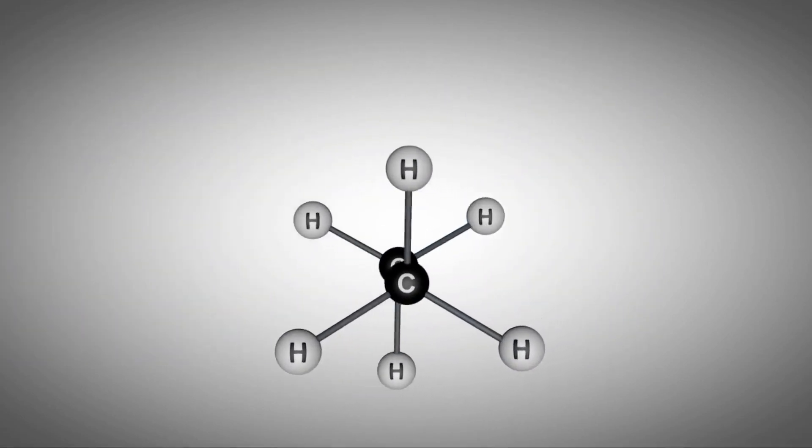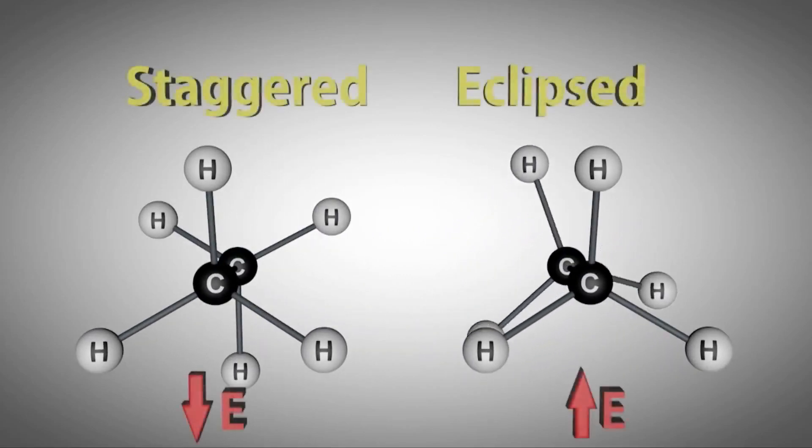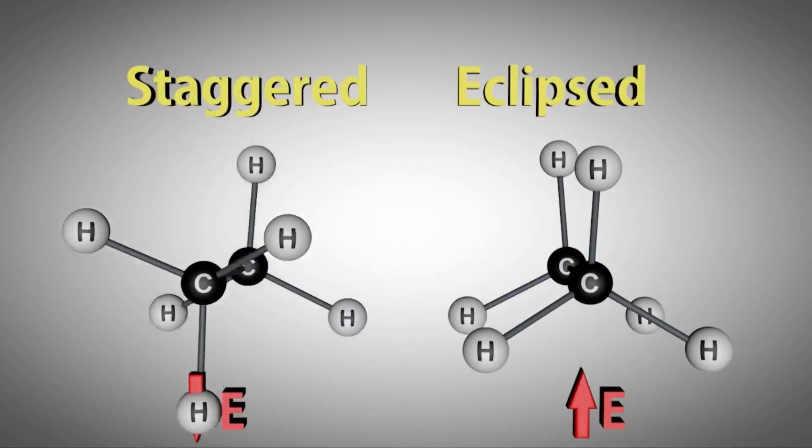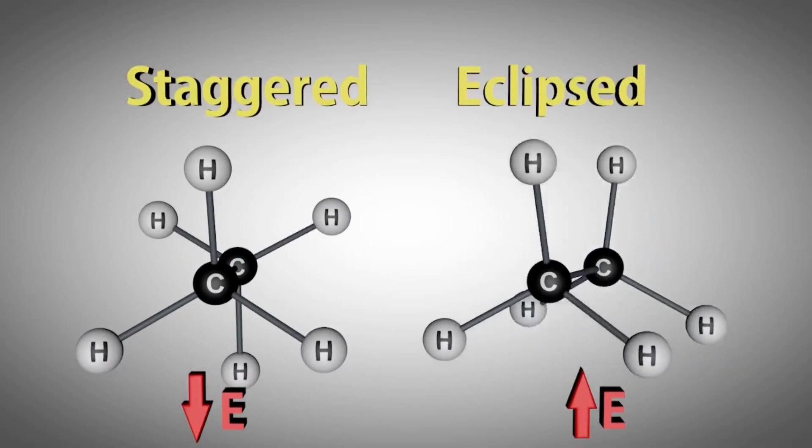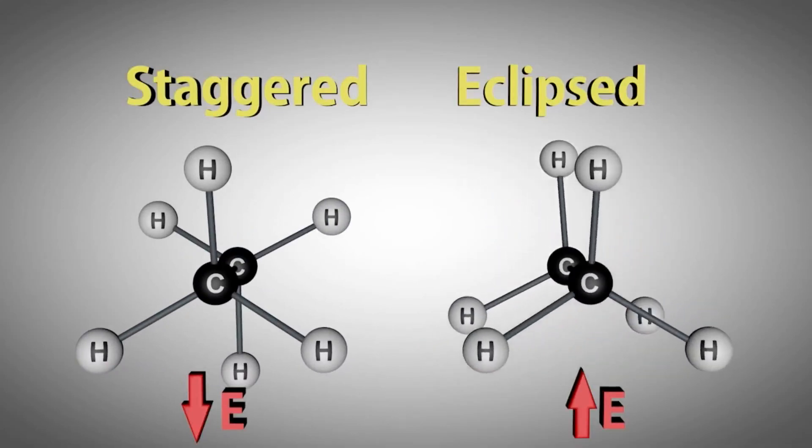Here we see the staggered and eclipsed conformations for ethane. The difference in relative energy between these two conformations is approximately 3 kcals per mole. Remember, atoms want to be as far apart from each other as possible. Think of it as less crowding.